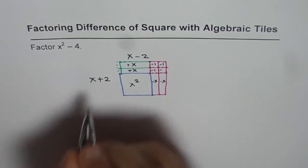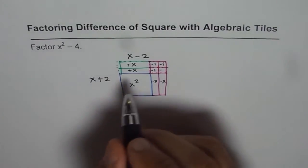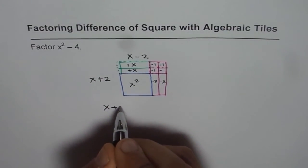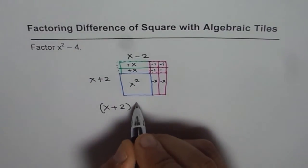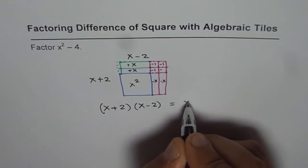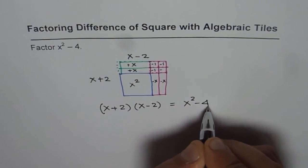So x plus 2 times x minus 2 represents x squared minus 4. So we get it in factored form, x plus 2 times x minus 2. That is equals to x squared minus 4.